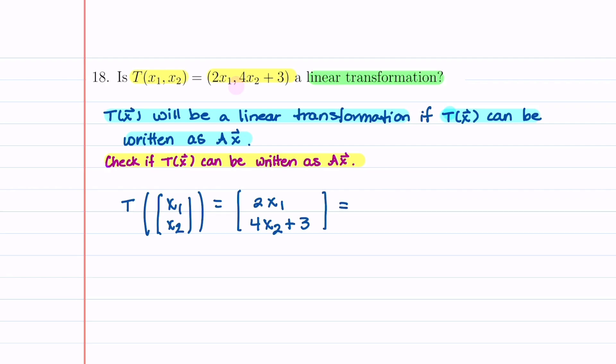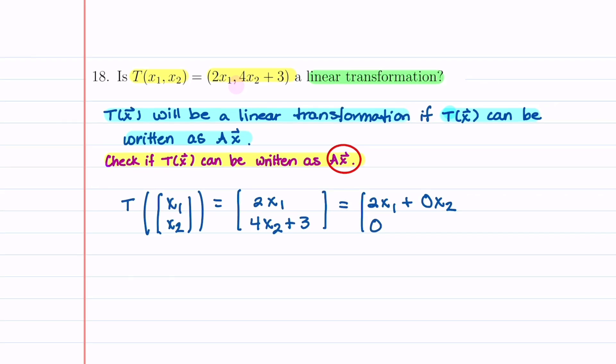Our goal is to see if we can write this as A times x. So let's pull this apart and try to write it as a matrix A times a vector x. An in-between step that will help is if we write 2x₁ and then there's no x₂s so let's write this as 0x₂. And then in our second component there are no x₁s so let's write 0x₁ plus 4x₂ plus 3. That will help us determine what A is going to look like.